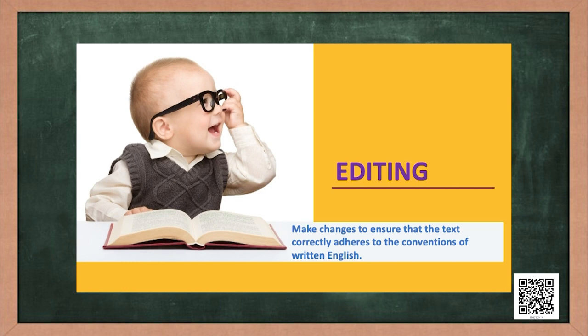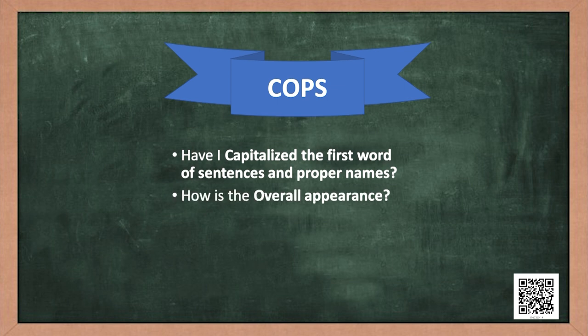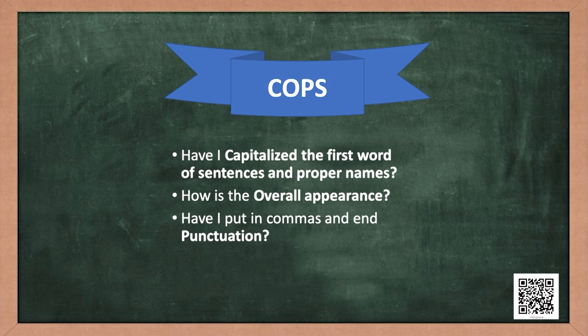Now you actually need to write down, adding details to the points that you thought of. Now comes the editing stage. At this stage you need to read your writing and make changes to ensure that the text correctly adheres to the conventions of written English. Any strategies for this one? Of course — this one is called COPS, as in 'call the COPS to correct your writing': C — Have I Capitalized the first word of sentences and proper names; O — Overall appearance; P — Have I put in commas and end Punctuation; S — Have I Spelled all the words correctly.